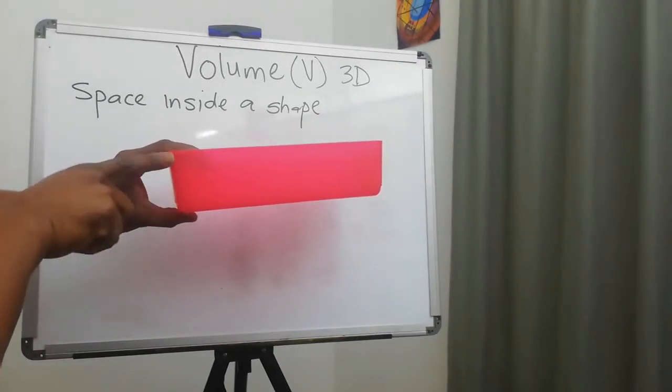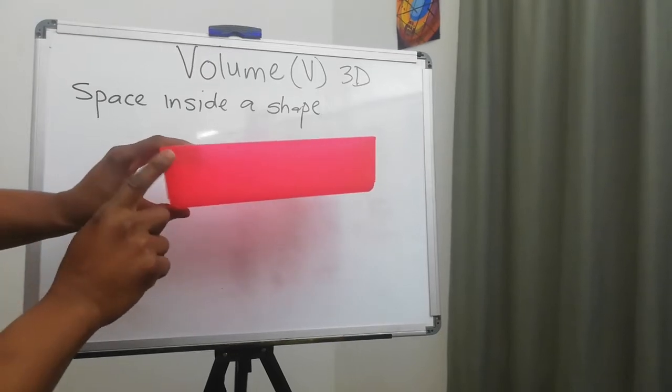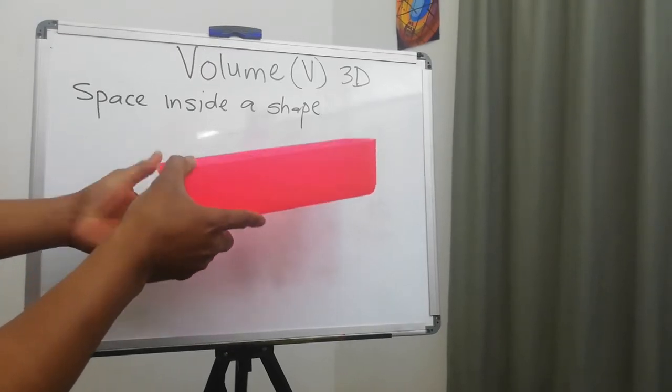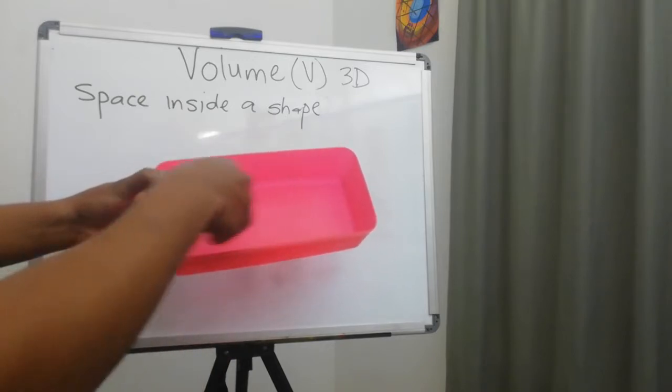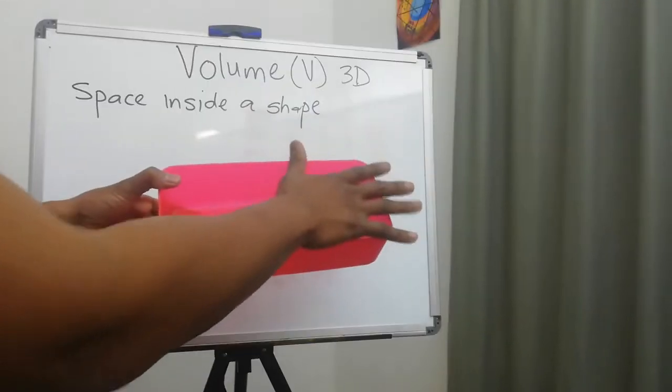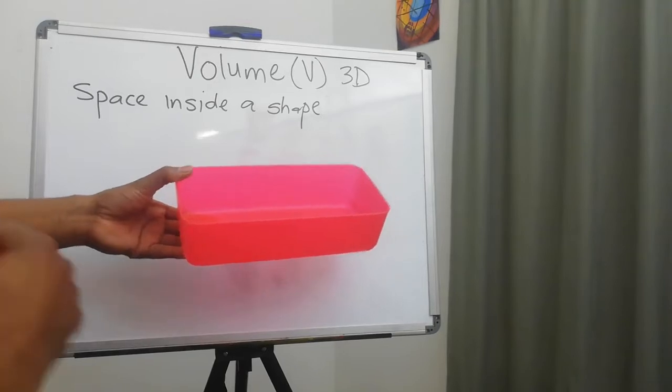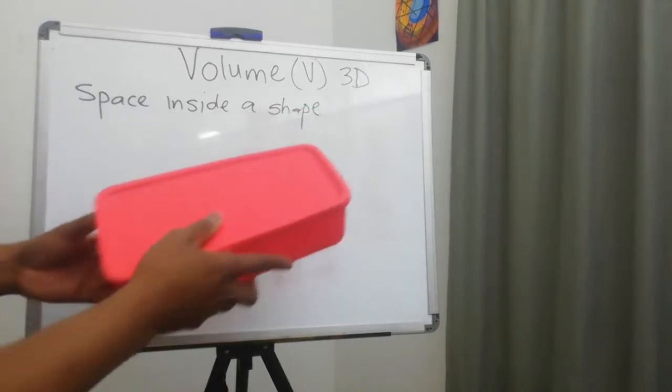Then we have a height and this height is critical because this height creates the volume—the space on the inside which we can now use to store items in.